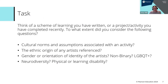I'd like everybody to take a moment and think of a scheme of learning that you have recently written, or a project or an activity you completed recently, and to what extent did you consider the following questions. This is a self-reflection task — you do not need to share your answers. Consider: cultural norms; assumptions associated with an activity; the ethnic origin of any artist referenced; gender or orientation of identity of the artist, such as non-binary or LGBTQ+; neurodiversity; and physical or learning disability. This is by no means a tick-box activity. It's important to consider that artists' backgrounds and experiences, and the intersectionality of these, shape each individual artist — who they are, the work they create, and how they connect with their audience.